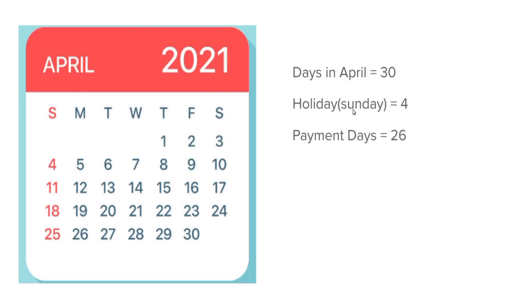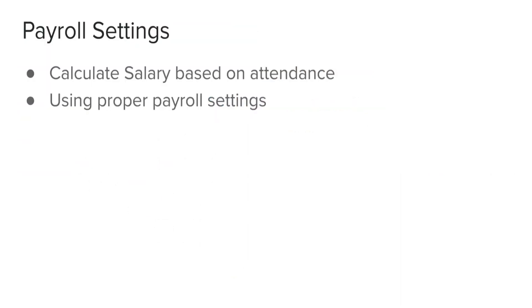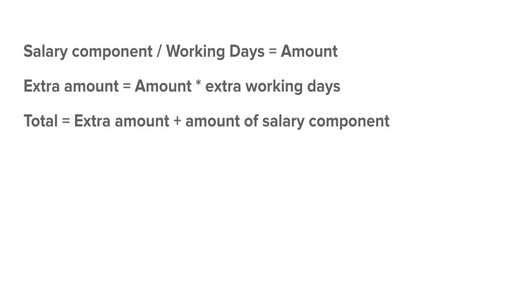Sundays are considered holidays, so four days are holidays. Based on that, the payment days will be equal to 26. Now let's say the employee worked on all 26 days and also decided to work on 4th of April, which is a Sunday. So he should be given payment for 27 days — that is 26 plus one Sunday's payment. This can be calculated using proper payroll settings, and it is calculated based on a formula for the amount calculation which we will see shortly.